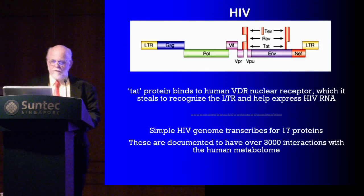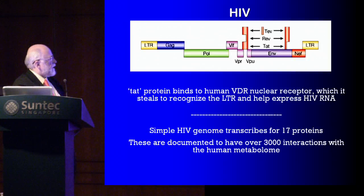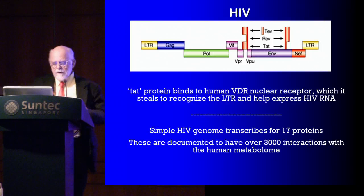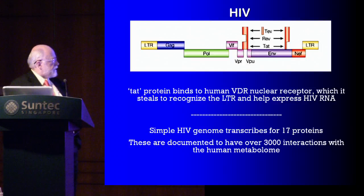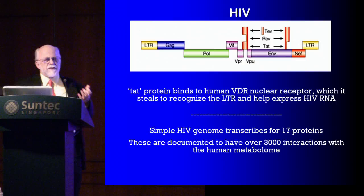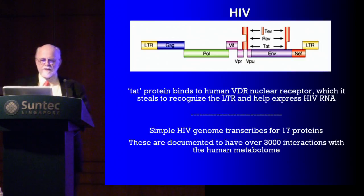The big daddy of them all is HIV. The TAT protein from HIV binds to the human VDR nuclear receptor and steals this receptor to recognize its own LTR and help express HIV RNA within the nucleus of cells. Interestingly, HIV has a very simple genome — transcribing for only 17 proteins — and yet these 17 proteins have over 3,000 interactions with the human metabolome, human proteins, and enzymes.